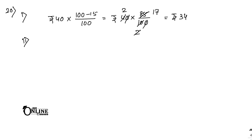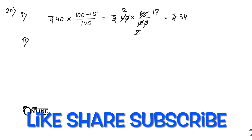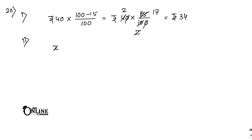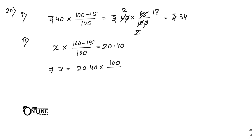Part 2: find the original price of an article sold for rupees 20.40. Let the original price be x. Decrease by 15 percent means x into (100 minus 15) by 100 equals 20.40. So x equals 20.40 into 100 by 85. Multiplying 20.40 by 100 gives 2040 by 85, and 2040 divided by 85 equals 24. The original price is rupees 24.